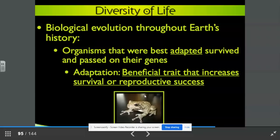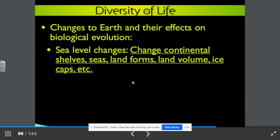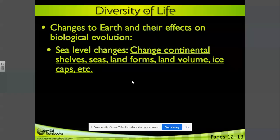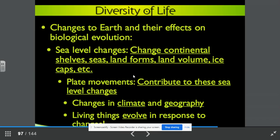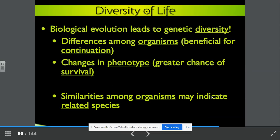Changes to Earth and their effects on biological evolution. So we've had sea level changes. The change in the continental shelves, seas, landforms, land, volume, ice caps, etc. Plate movements contribute to these sea level changes. Changes in climate and geography. Living things evolve in response to changes. Biological evolution leads to genetic diversity. Differences among organisms beneficial for continuation. Changes in phenotype gives the greater chance of survival. Similarities among organisms may indicate related species.